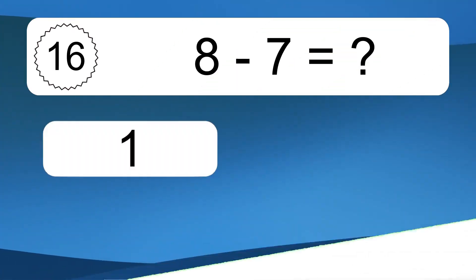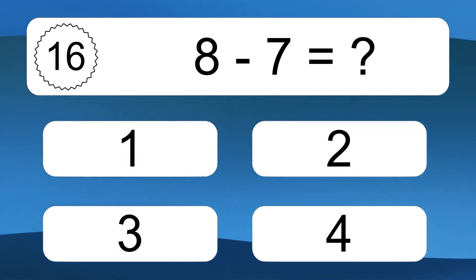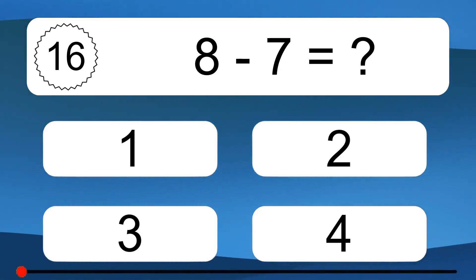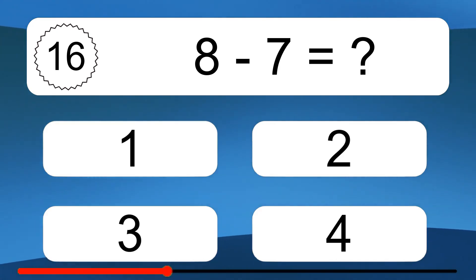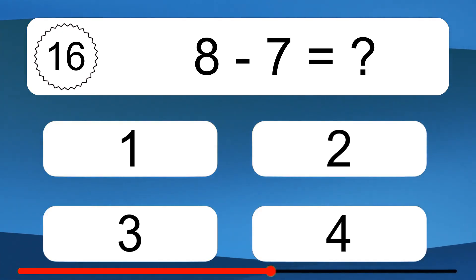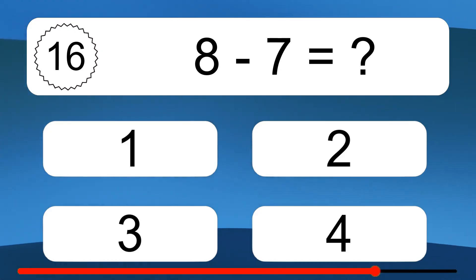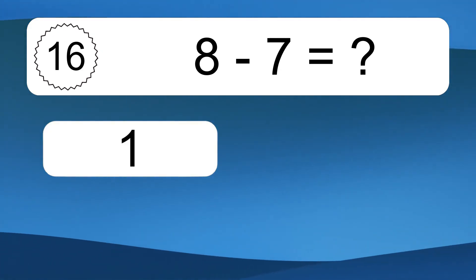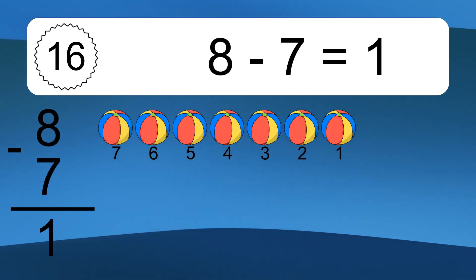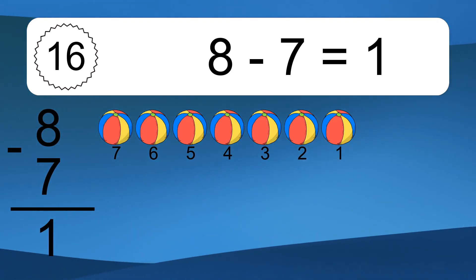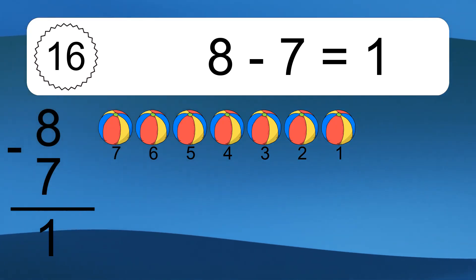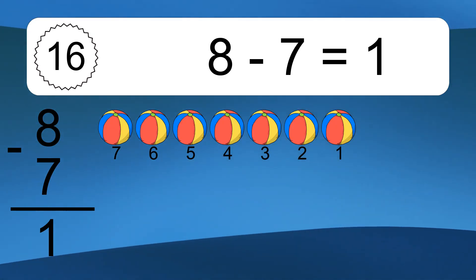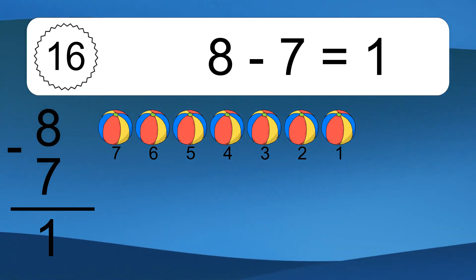8 minus 7 equals what? 8 minus 7 equals 1. Let's count it: 7, 6, 5, 4, 3, 2, 1.